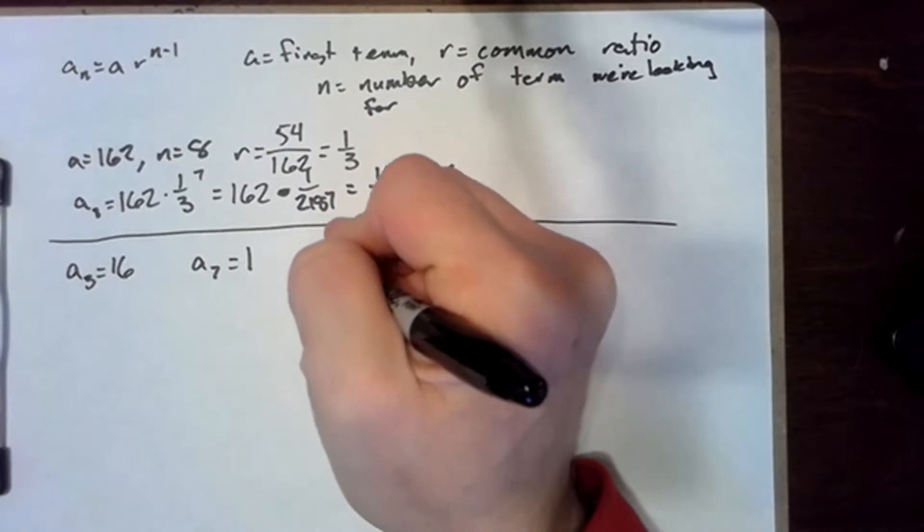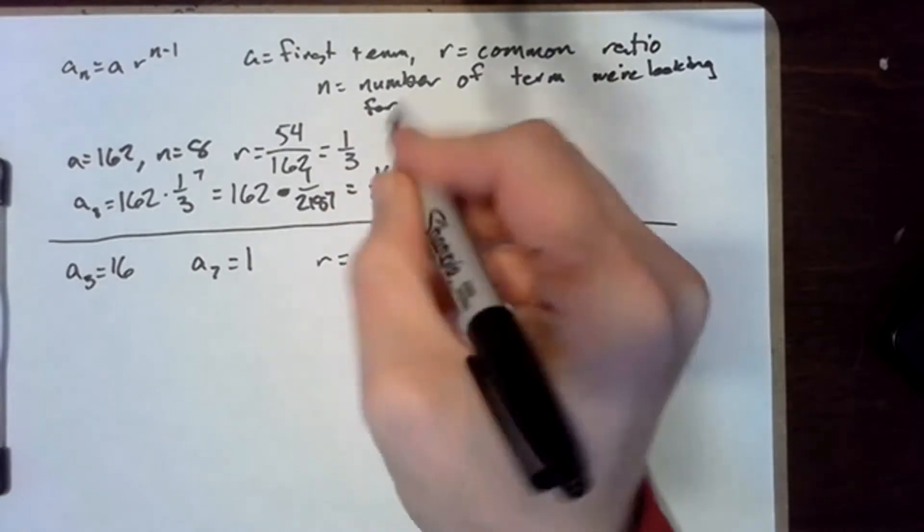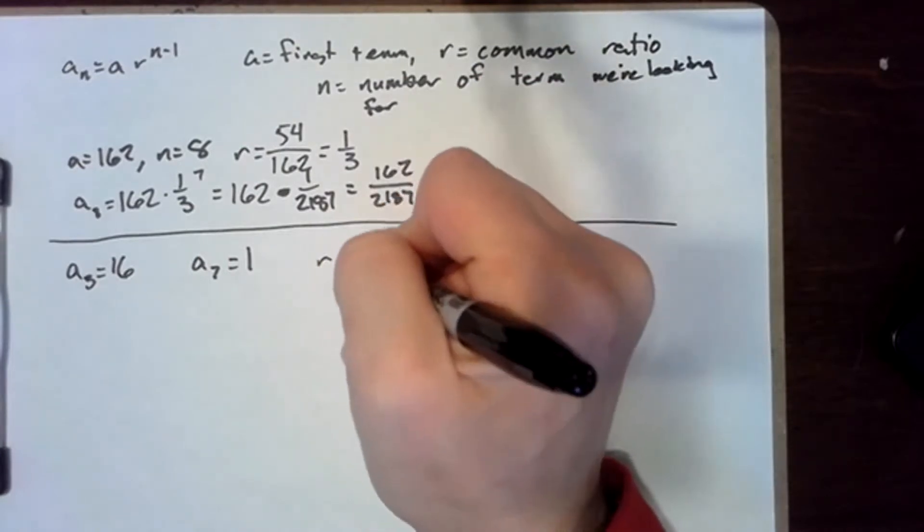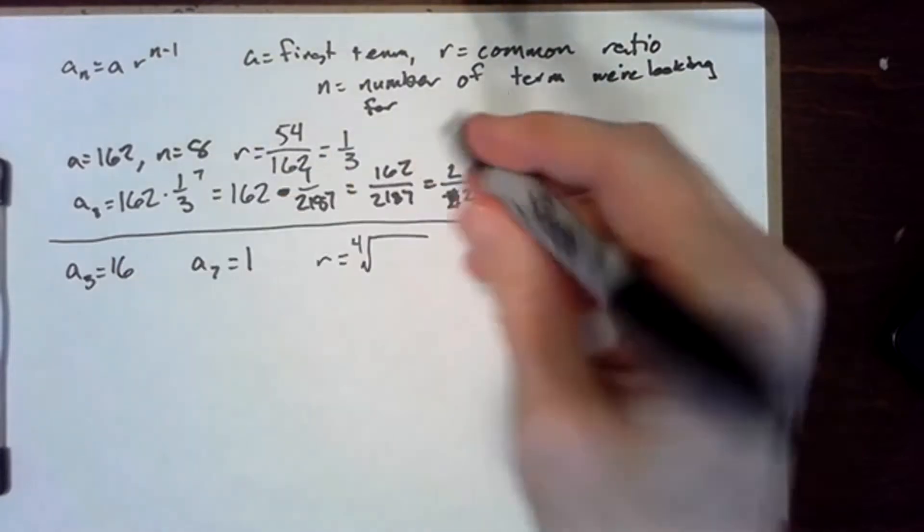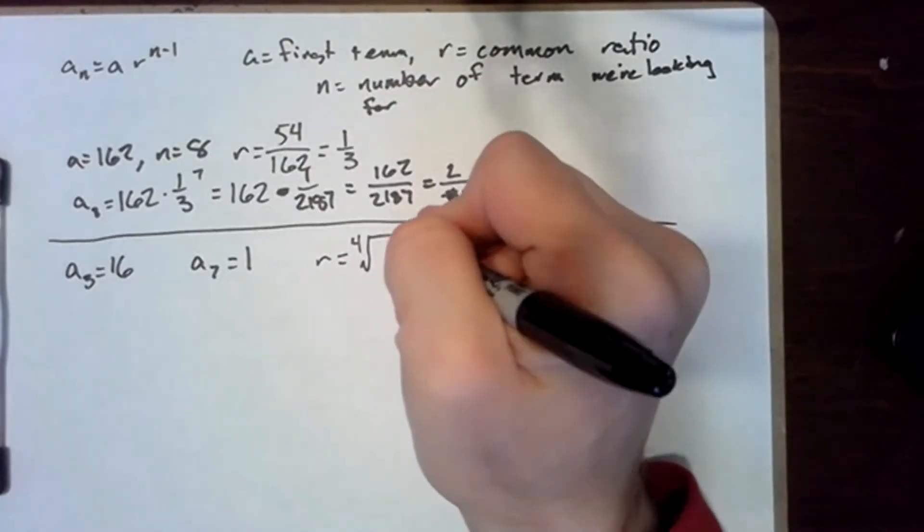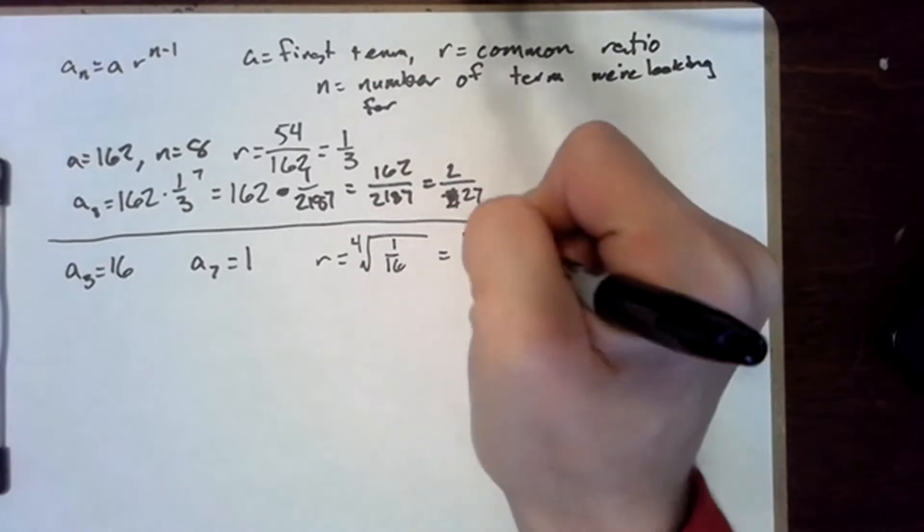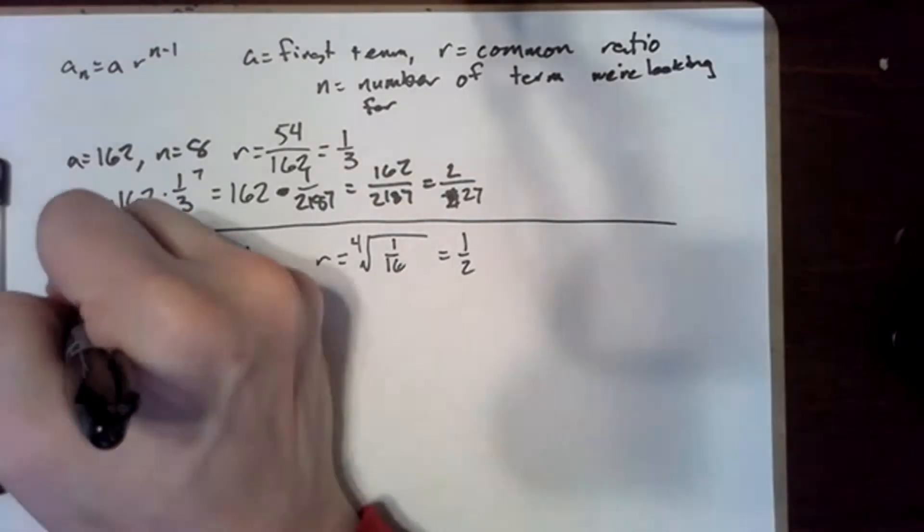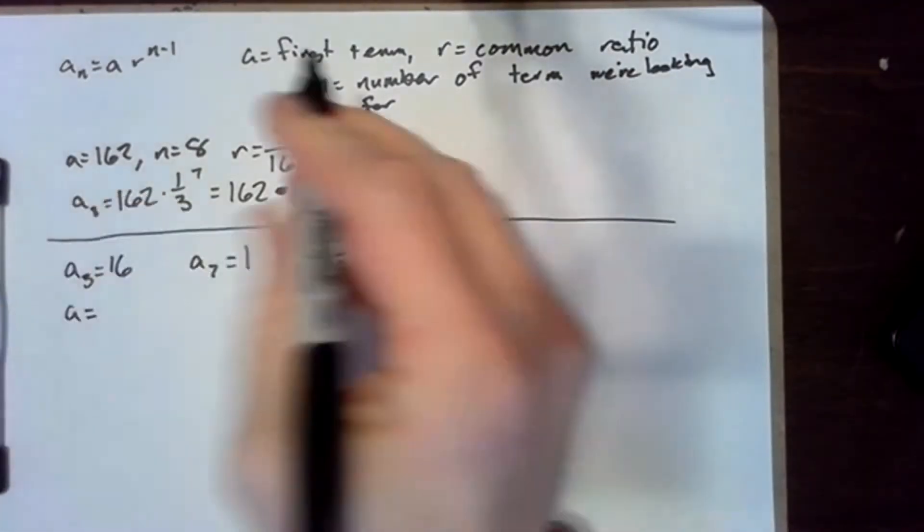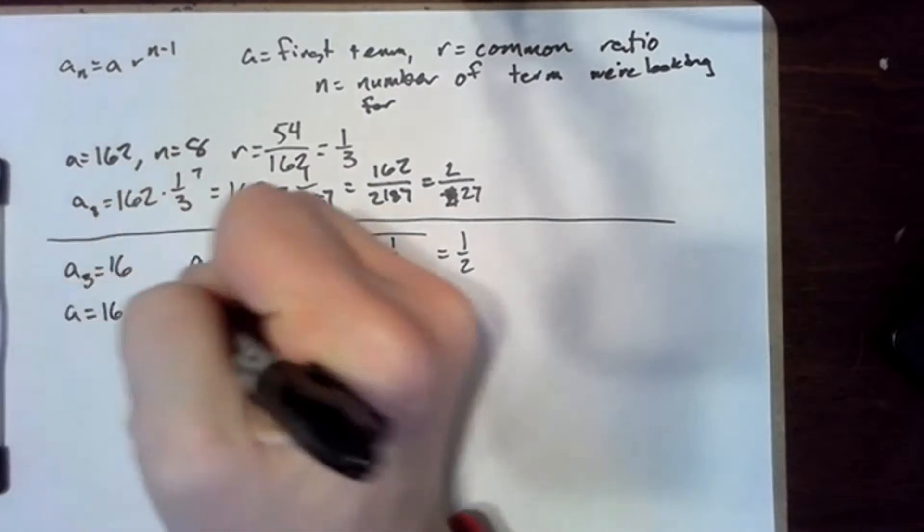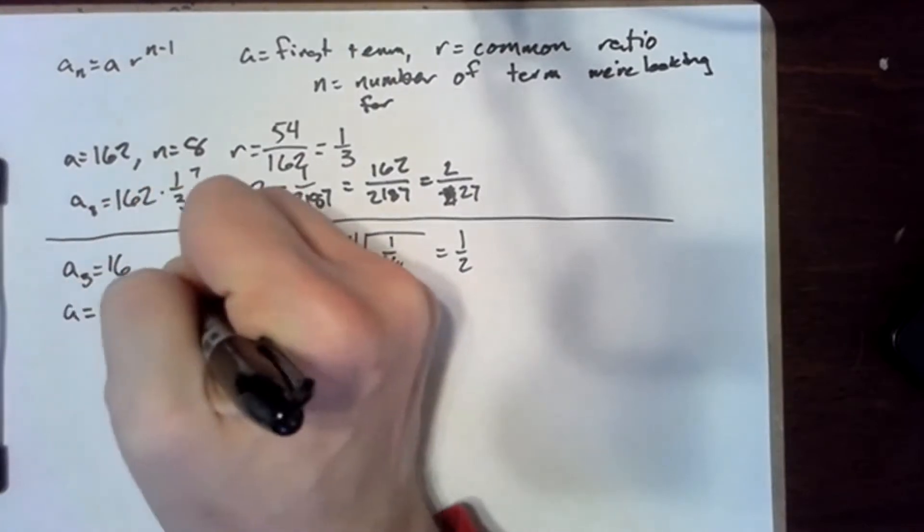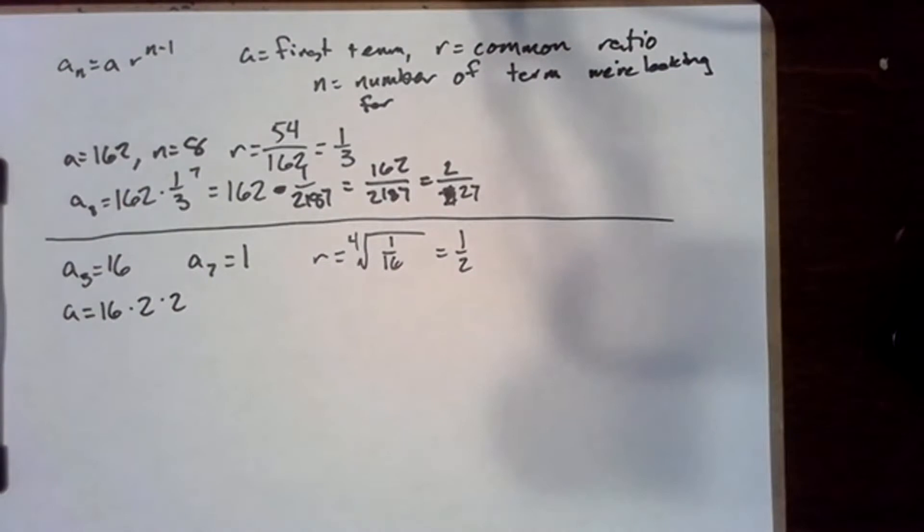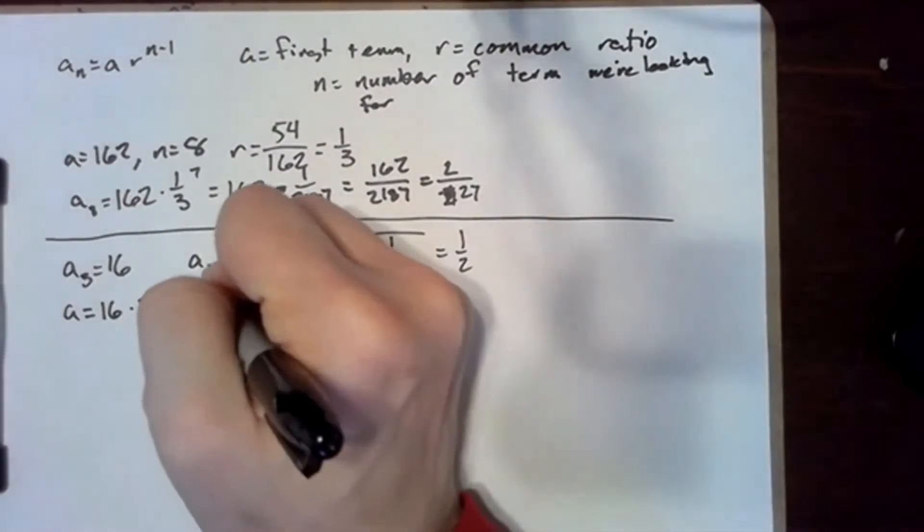So we can find the common ratio is the fourth root of 1 over 16. Well, that's one half. Further, to find a, that's going to be 16 times 2 times 2, or 16 divided by one half divided by one half. Same thing. So that's just going to be 64.